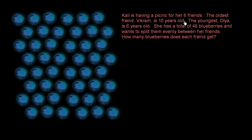Callie is having a picnic for her six friends. The oldest friend, Vikram, is 10 years old. The youngest, Dia, is six years old. She has a total of 48 blueberries and wants to split them evenly between her friends. How many blueberries does each friend get?